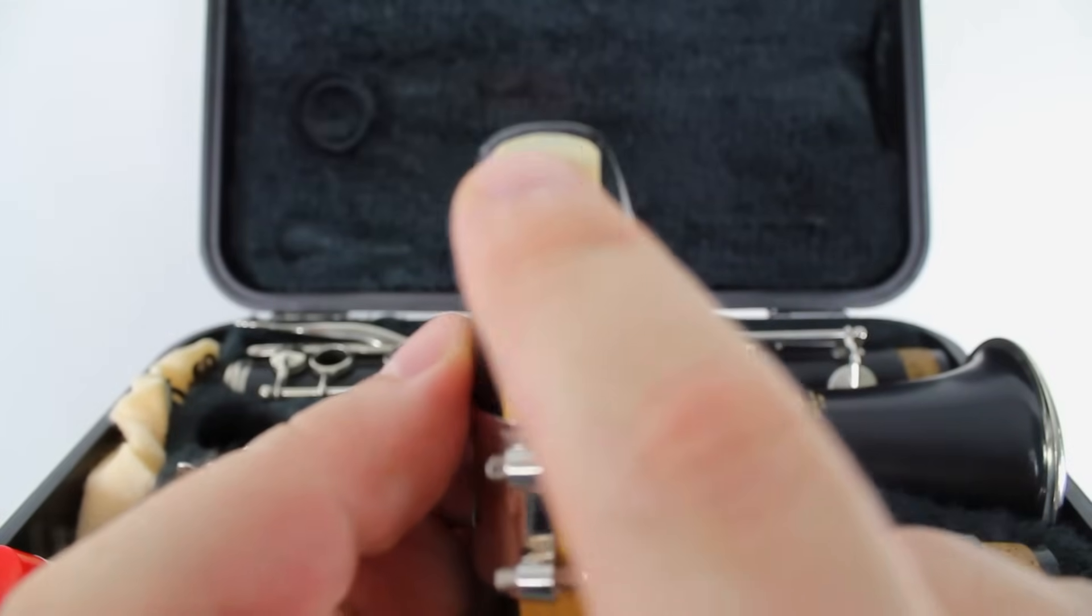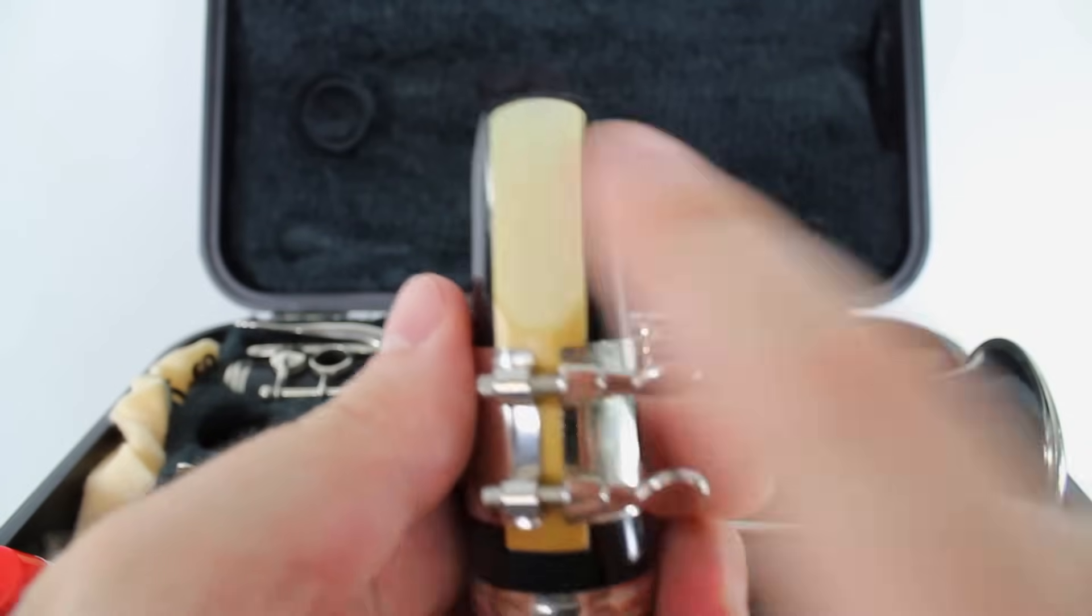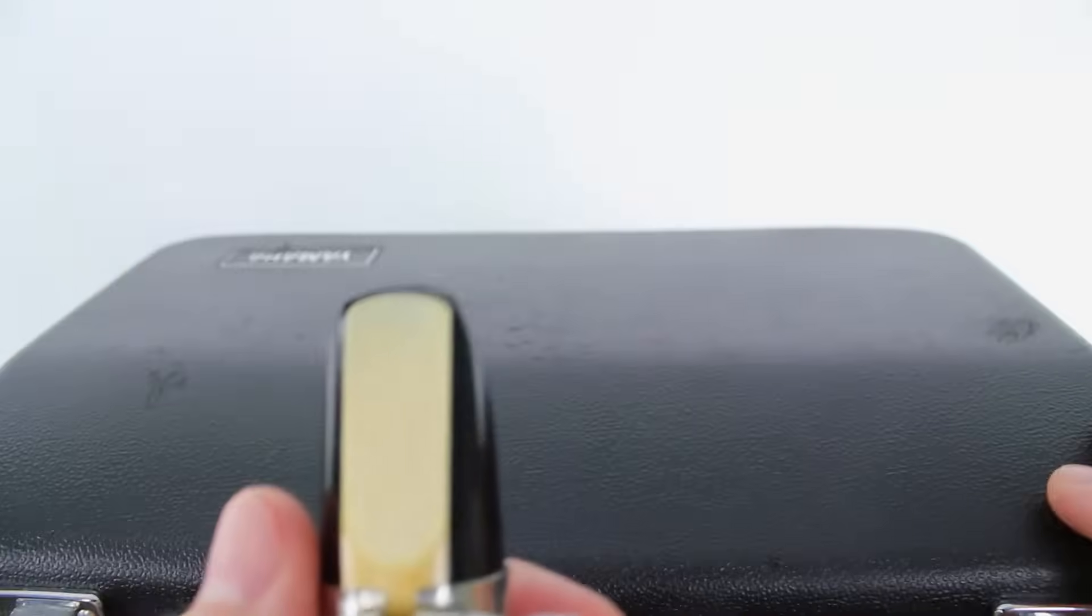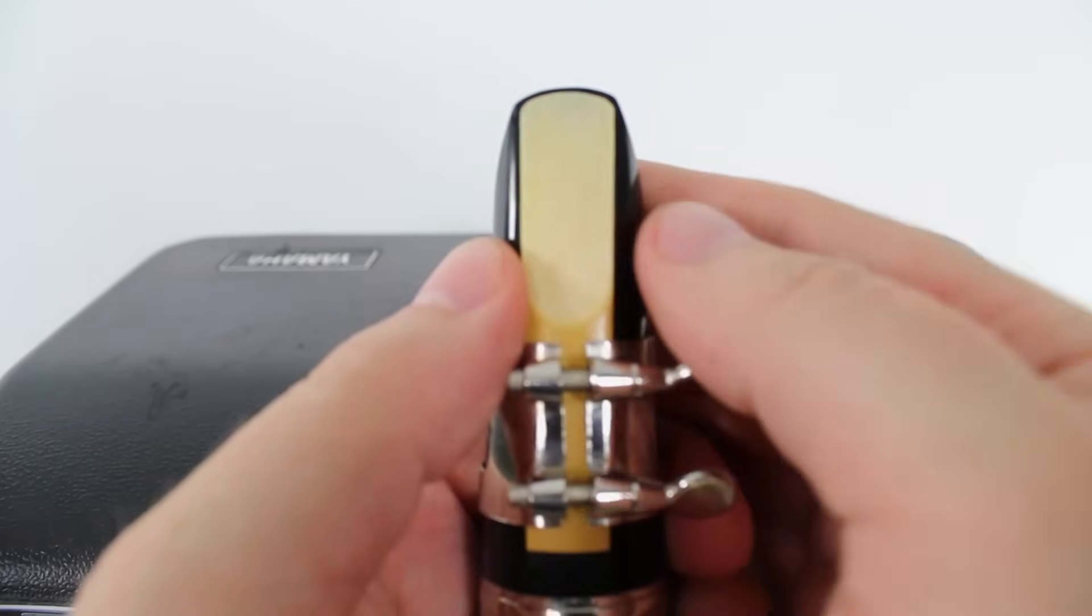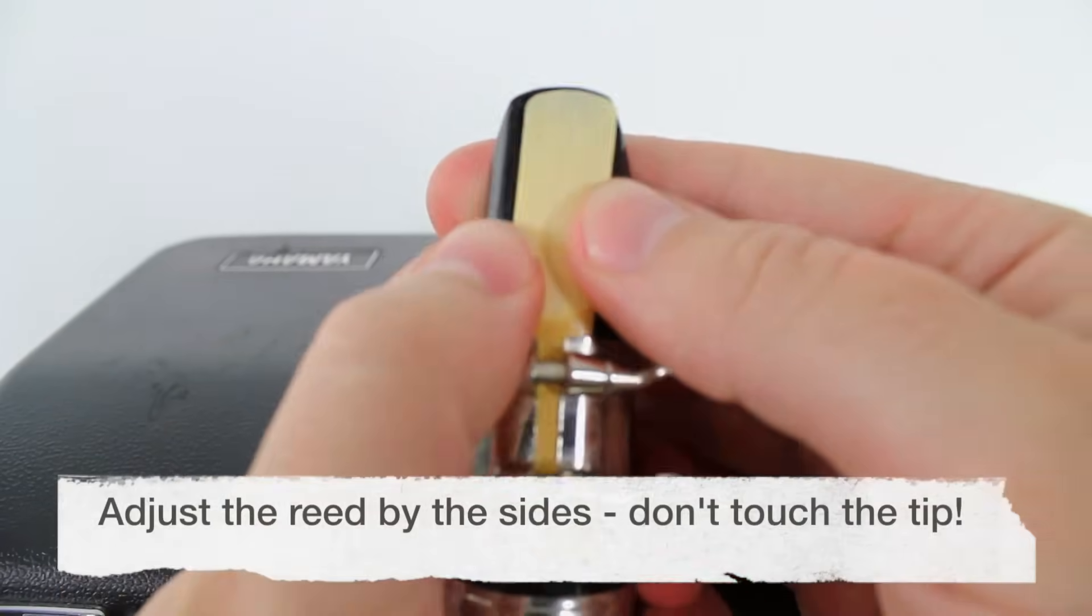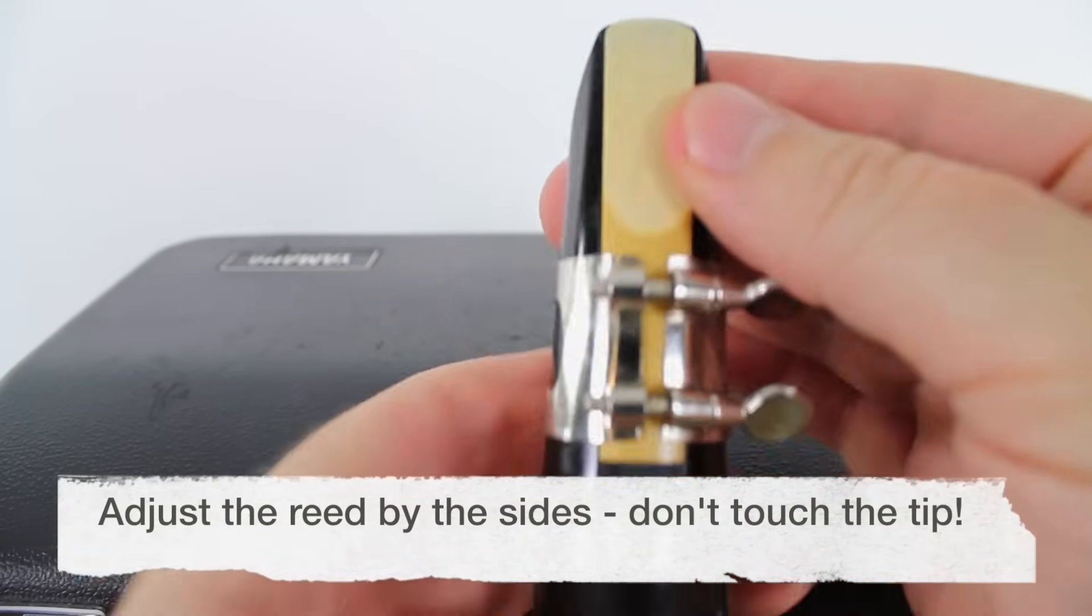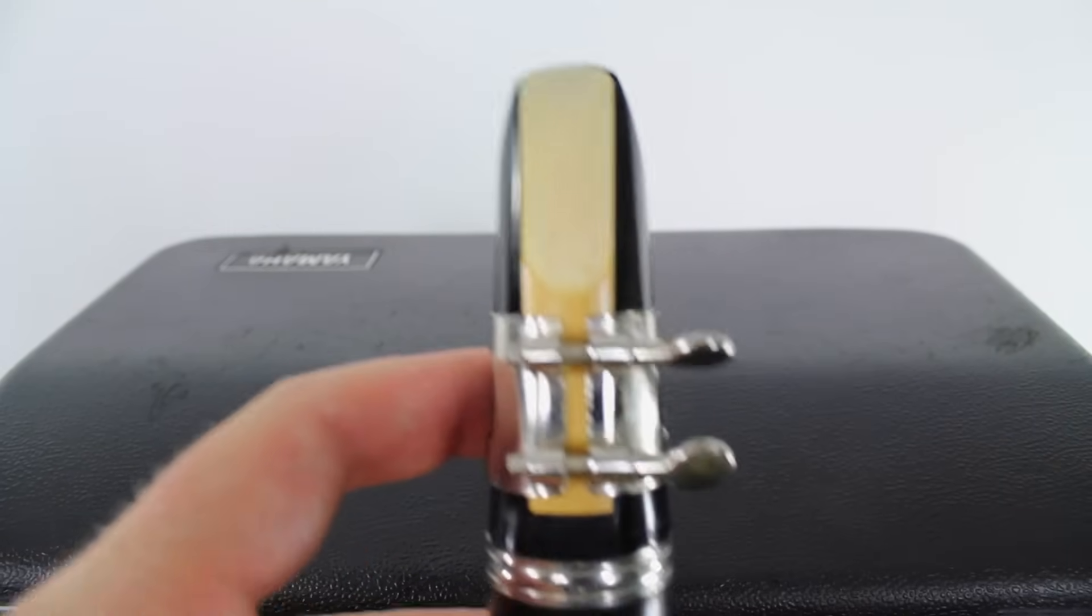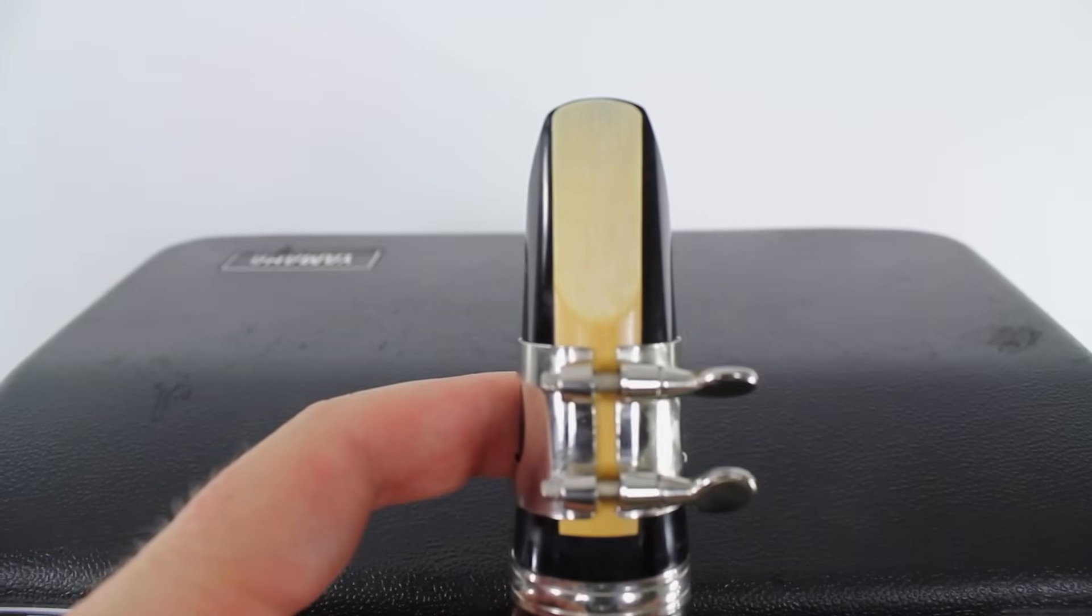So make your reed and your mouthpiece and ligature look just like mine. Make sure that the tip of the mouthpiece is almost perfectly even with the tip of the reed. And I'm going to close the clarinet case so you can see this better with our white background. Can you see how the reed is almost even with the tip? We're going to push it up just a little bit so you can see maybe just a hairline of the black mouthpiece behind the reed. That is perfect. So make your reed and mouthpiece look just like this.